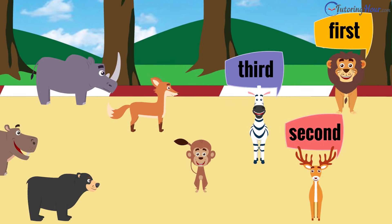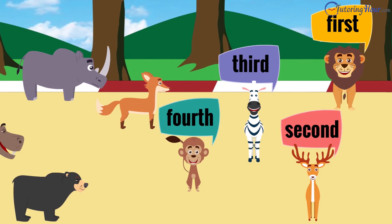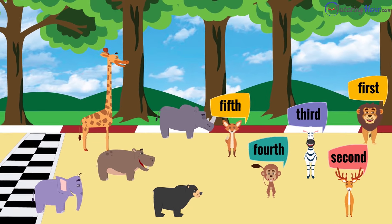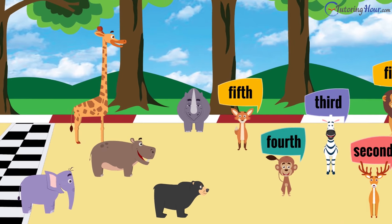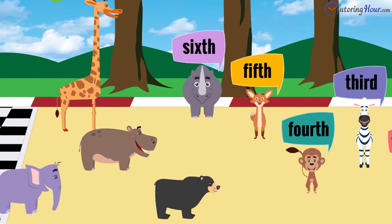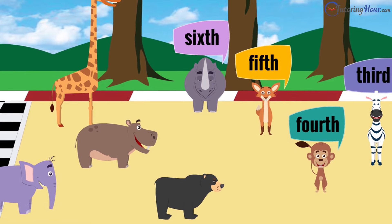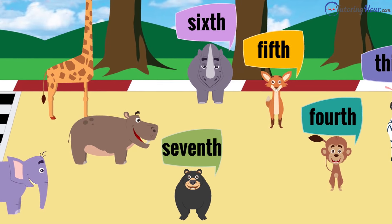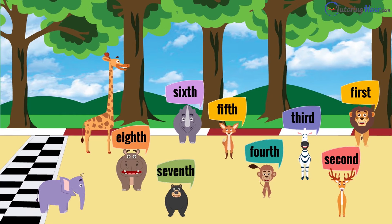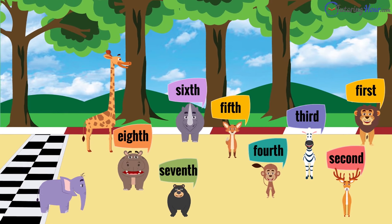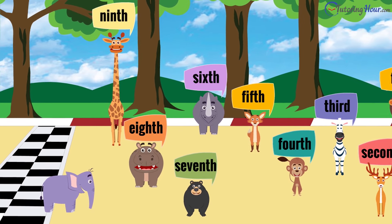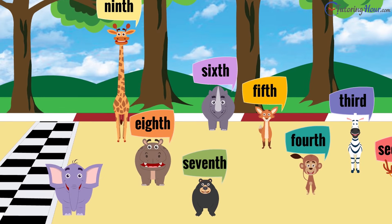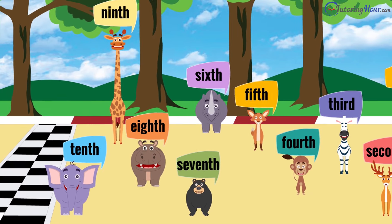On the fourth position is the monkey. The fox made it to the fifth position. Who's sixth? The rhino. Here comes the bear. He is seventh. The hippo has gained eighth, followed by the giraffe in the ninth spot. Better late than never. We have the elephant on the tenth place.